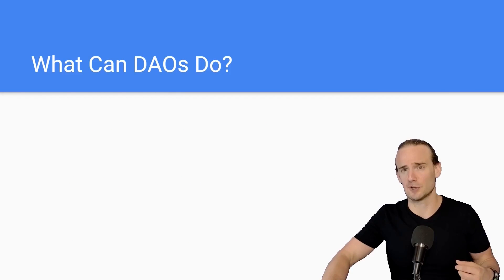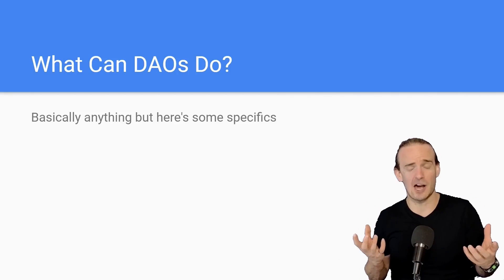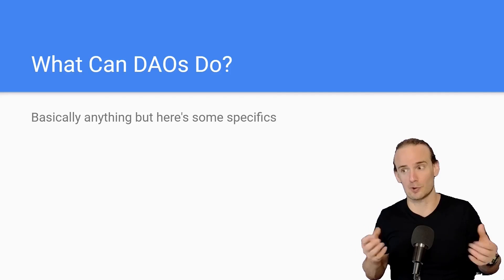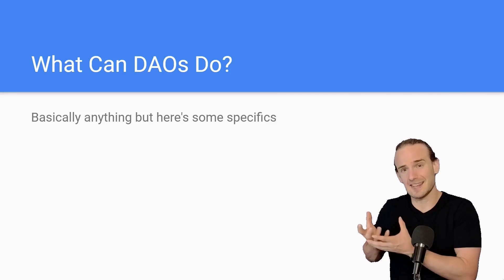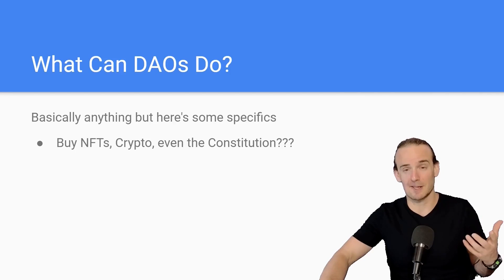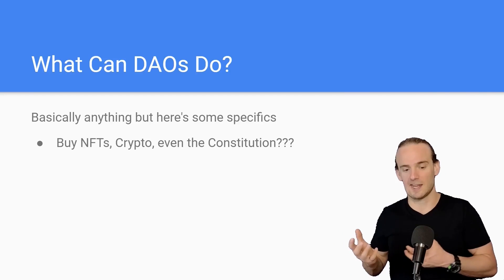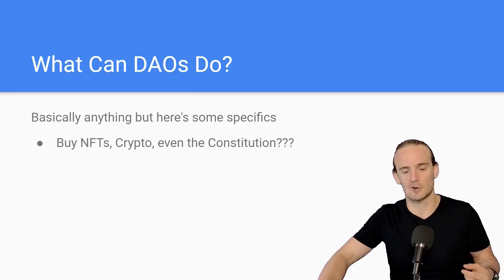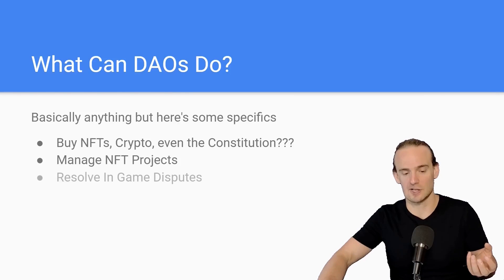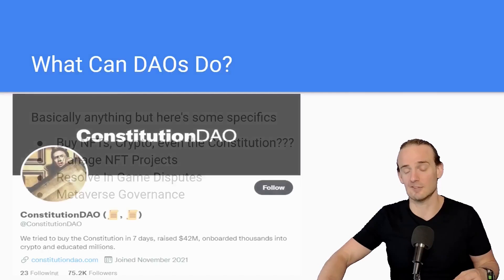That probably sounds pretty cool, but what can a DAO actually do? What are the use cases? A DAO is just a collection of individuals working towards a common objective, so anything that individuals doing together could do, a DAO can do also. Typically DAOs can purchase NFTs and sell them for a profit, do fundraising, create cryptocurrencies, manage NFT projects, resolve in-game disputes, and even be used in metaverse governance.